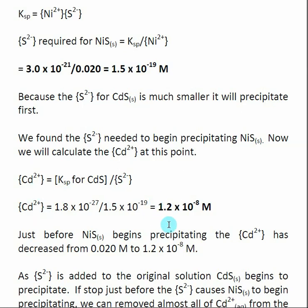When we're done, the concentration of cadmium remaining is 1.2×10⁻⁸. So we've achieved a very effective separation — the concentration of Cd²⁺ has dropped from 0.02 to 1.2×10⁻⁸, meaning we've almost completely removed the cadmium from solution. What's left over is Ni²⁺, which we can then remove by continuing to add S²⁻.